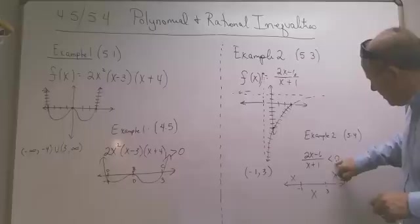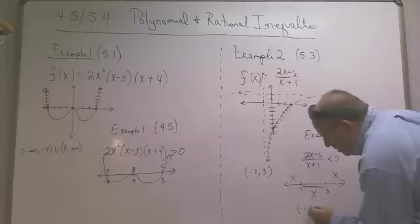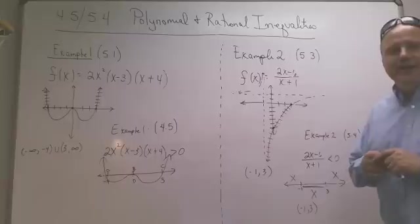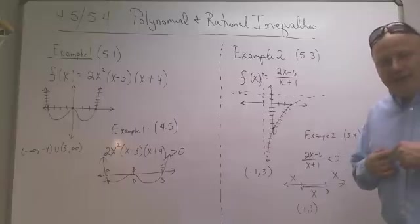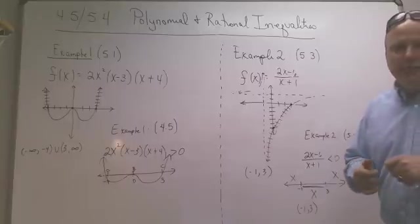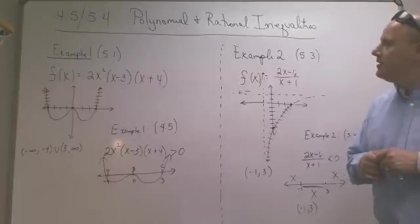I'm looking for the part that's less than 0, so it would be this part right here. Between negative 1 to 3. So you've got to find your niche. You've got to find the way you like how to do it. If you like my way, then great. But if you like testing points, I have no problem with that. You've just got to find the way you like the best. And that's it.